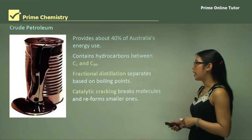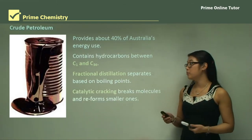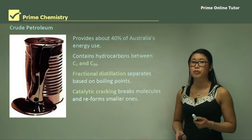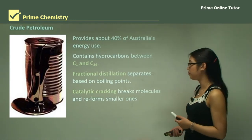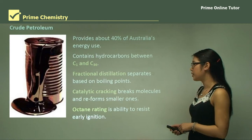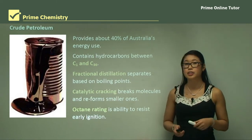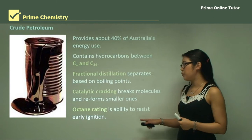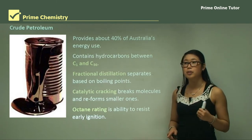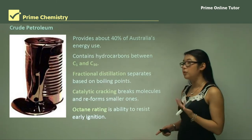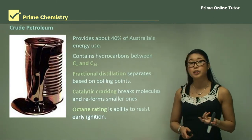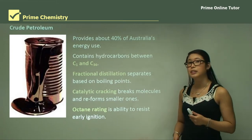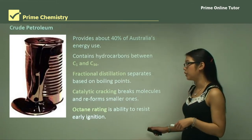Catalytic cracking breaks molecules and reforms them into smaller ones, and this process is used in petroleum refinery. Octane rating is the ability to resist early ignition. We don't want fuels to ignite too early because it can damage equipment, especially engines in cars. So a higher octane rating is a good thing — it means the fuel is less likely to ignite too early.